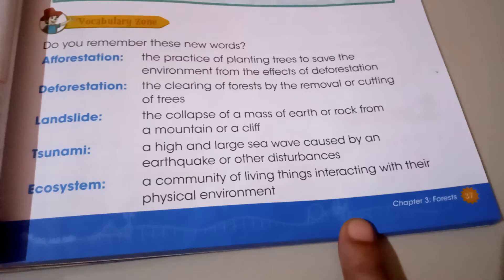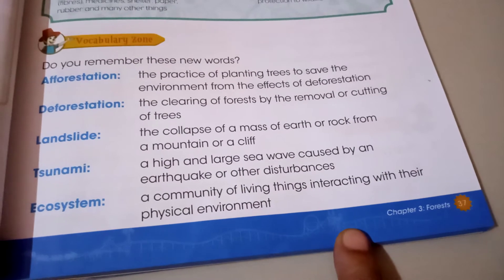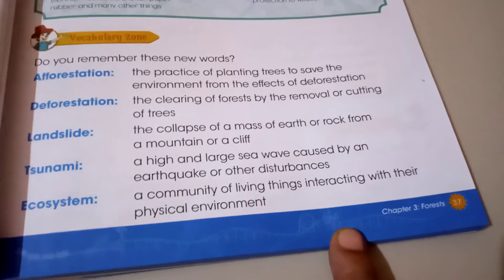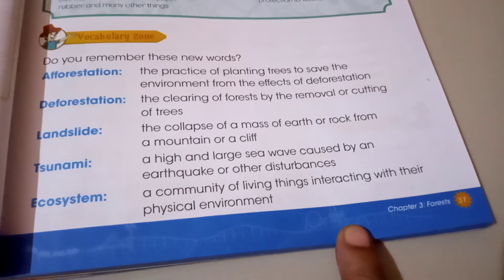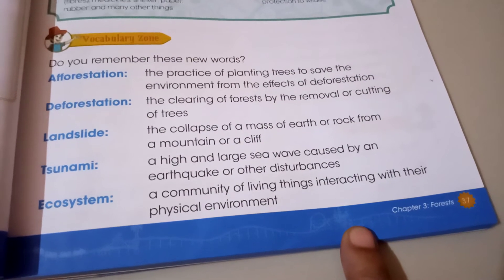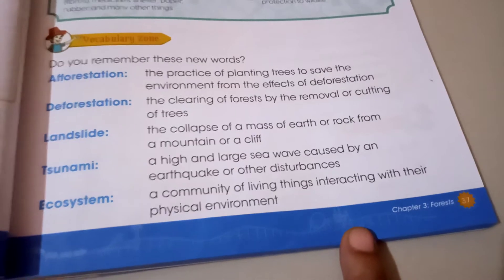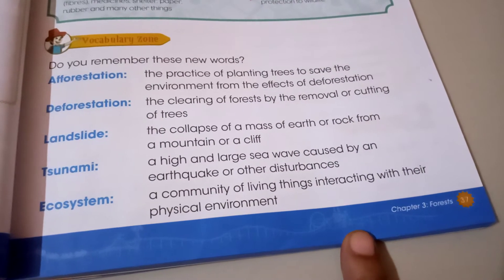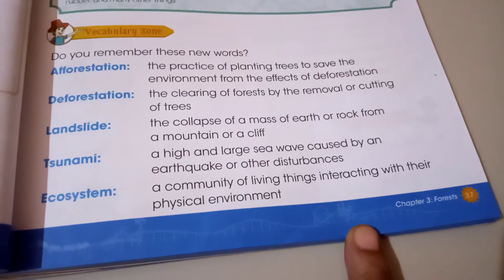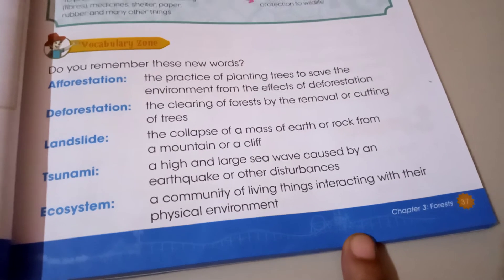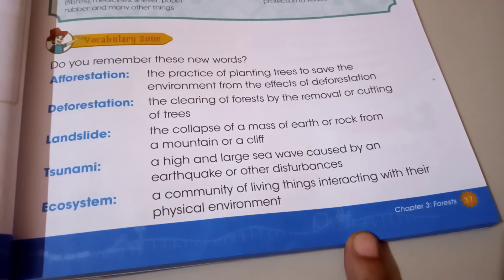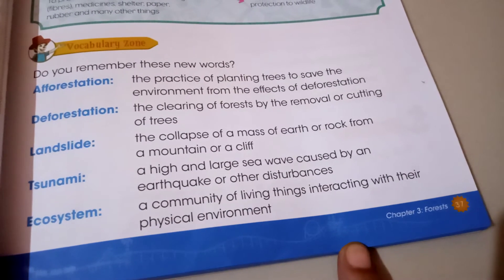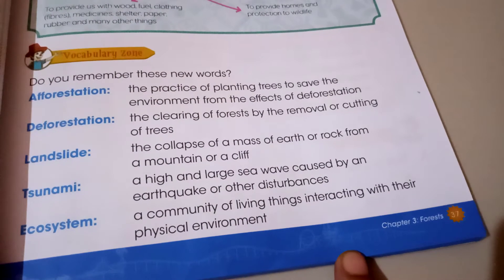Deforestation — you have also remembered before — is the cutting or removing of trees and the forest. Landslide is the collapse of the earth or rock from a mountain or a cliff. Tsunami is when large sea waves take over people and houses, caused by an earthquake or other disturbances. Ecosystem is the community of living things interacting with their physical environment.